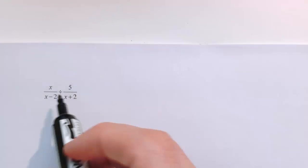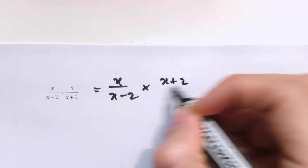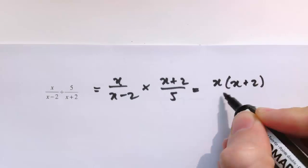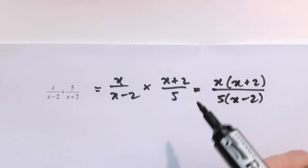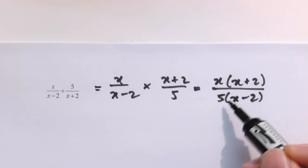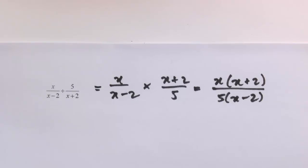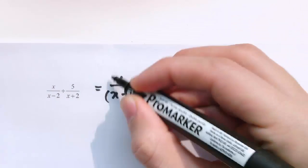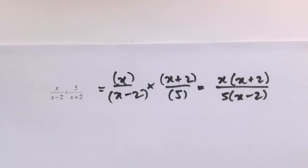In another division example, we turn the second fraction upside down and multiply, getting x(x+2) over 5(x-2). It's really important to keep expressions in brackets — for example, 5x−2 is different from 5(x−2), which multiplies out to 5x−10. If in doubt, put brackets in. We can always think of numerators and denominators as being in brackets.